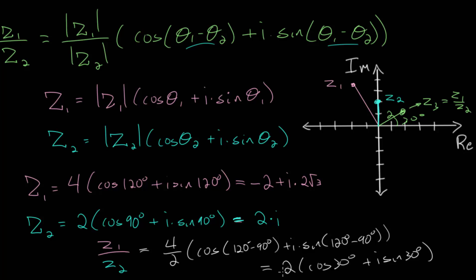If we want, we can put this into its rectangular form by distributing. We would get the square root of 3 plus i. We can verify all of this by taking z1 here and dividing it by z2 in rectangular form. Remember, when we're dividing these, we would multiply by the complex conjugate and carry out the arithmetic.